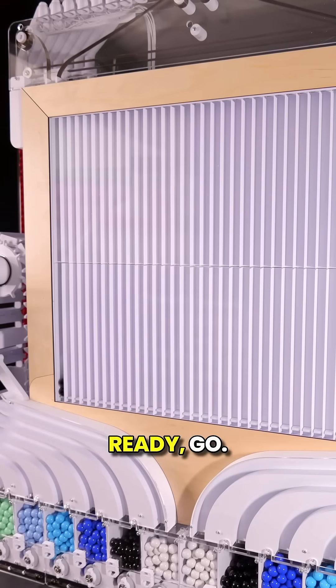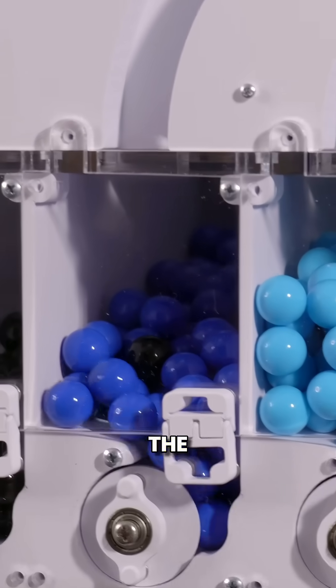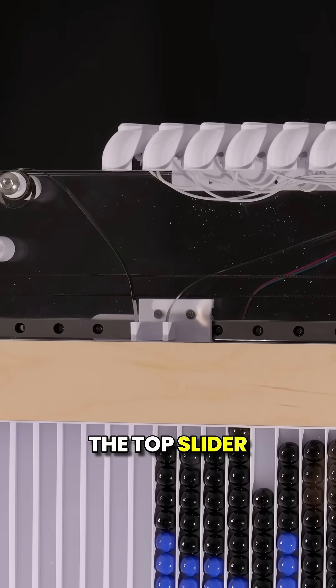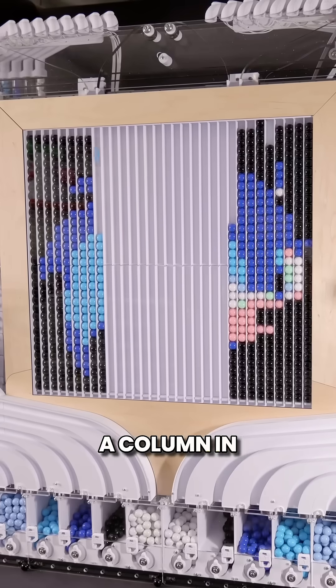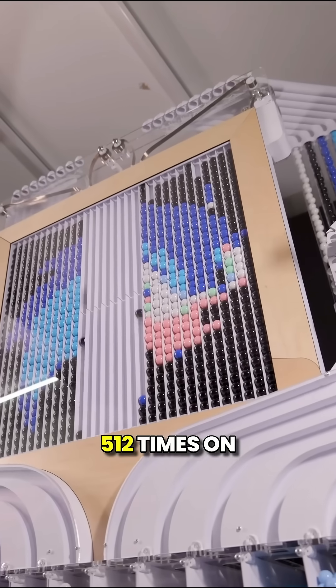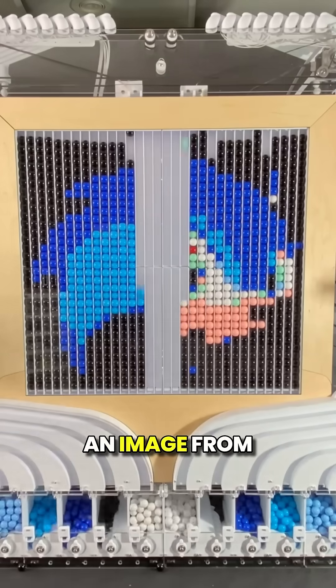The next image is loaded up onto the machine. Ready? Go. The machine works by converting the image data into a color. The top slider moves the self-adjusting funnel, allowing the selected color to drop into a column in the frame. This is repeated 512 times on each side, drawing an image from the outside in.